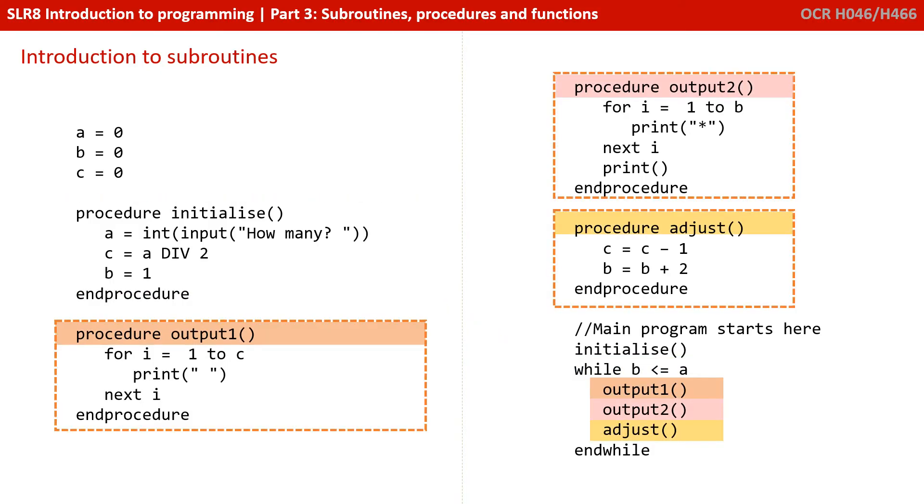In a similar fashion, you can see the main program contains three other calls to procedures. And again, each time we hit one of those, we would jump off to the appropriate subroutine, execute the code inside it, and then return.